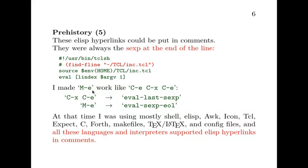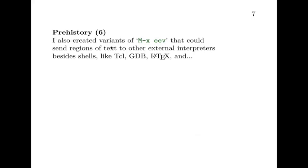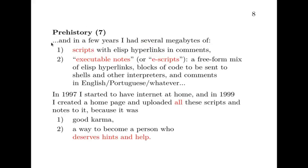I was doing that so much — going to the end of the line and then executing the expression before point — that I defined a key to do that. I defined meta-e to work like ctrl-e followed by ctrl-x ctrl-e, and I named it eval-sexp-eol. At the time all the languages and interpreters I was using supported hyperlinks in comments like this, and I also created variants of meta-x ev that could send the region to other interpreters. In a few years I had several megabytes of notes and scripts.